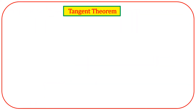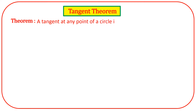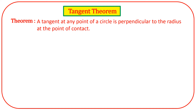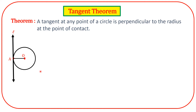Tangent theorem — on page number 51, this theorem's proof is given. This is for more information. A tangent at any point of a circle is perpendicular to the radius at the point of contact. Here first we draw a figure: a circle with center O. We take a line L, where A is the point of contact, and from the point of contact we draw radius OA.